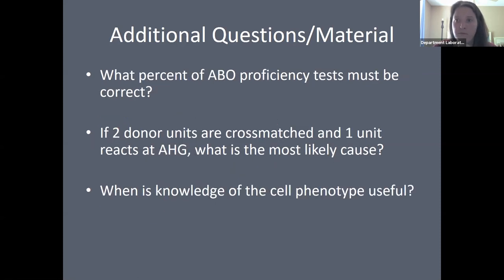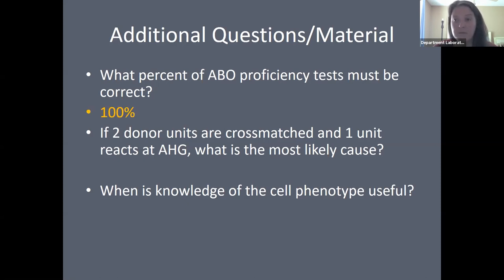From the quality assurance lecture: what percent of ABO proficiency testing must be correct? Proficiency testing comes from regulatory agencies such as CAP. Each technologist must be documented as involved in proficiency testing, and ABO testing must meet the criteria of 100% accuracy in determining ABO types.